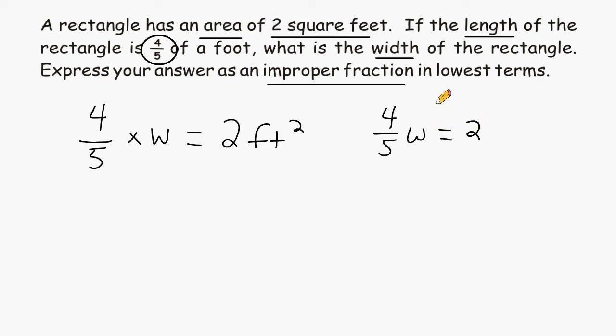So what we have here is an algebraic equation, and the w has a coefficient of 4 fifths. What we want to do is get the w by itself, so at the end it will say w equals whatever that value is.